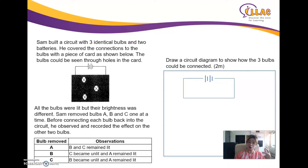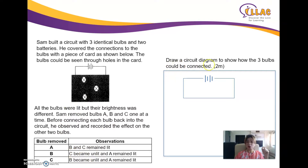Remember: if bulbs are in series, the light will be brighter. If they are in parallel, the light will be dimmer. Before connecting each bulb back into the circuit, he removed them one by one and wrote down his observations. So we need to draw a circuit diagram to show how the three bulbs could be connected.